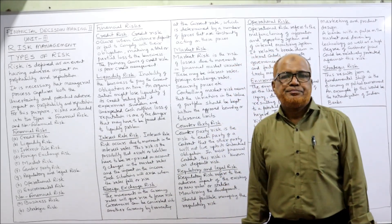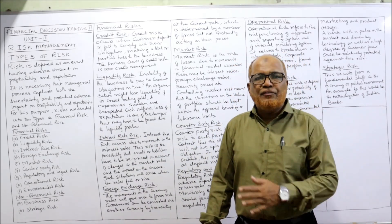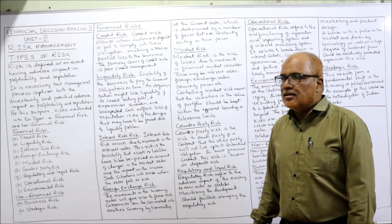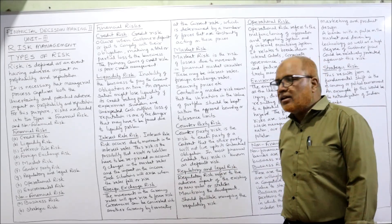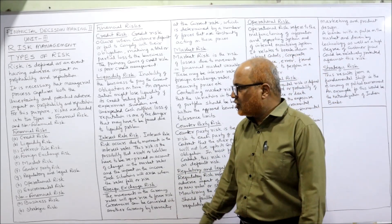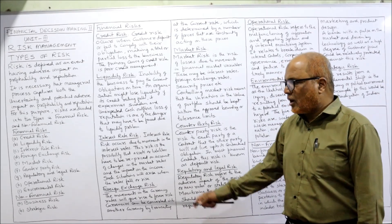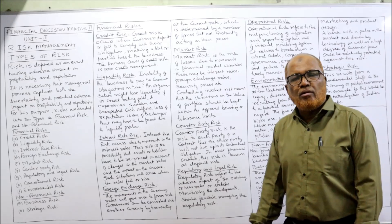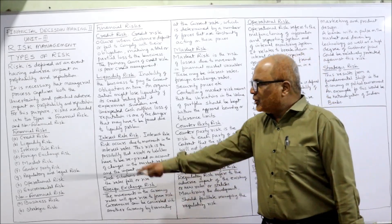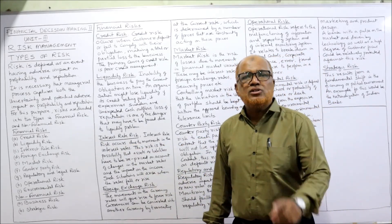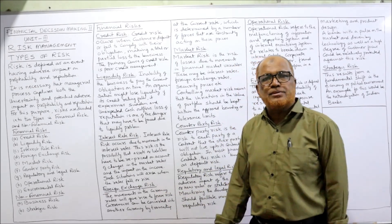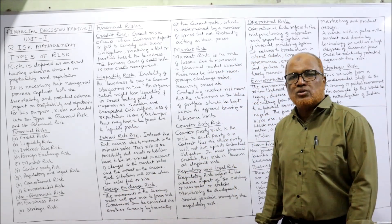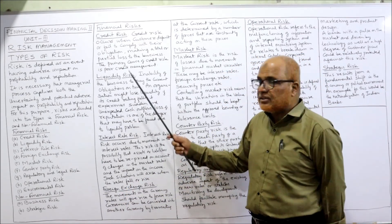The different types of financial risk are: credit risk, liquidity risk, interest rate risk, foreign exchange risk, market risk, counterparty risk, regulatory and legal risk, operational risk, and environmental risk. You have to remember all these types for examination. Non-financial risks are business risk and strategic risk. I will explain all the different types one after the other.